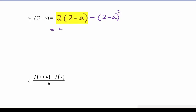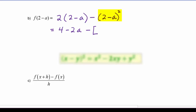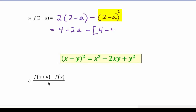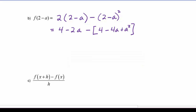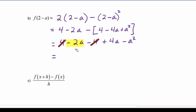So we get 4 minus 2a, and then we have to subtract 4 minus 4a plus a squared. This becomes 4 minus 2a minus 4 plus 4a minus a squared. When we combine like terms, the 4 and negative 4 cancel out, negative 2a plus 4a is 2a, and we're left with 2a minus a squared.